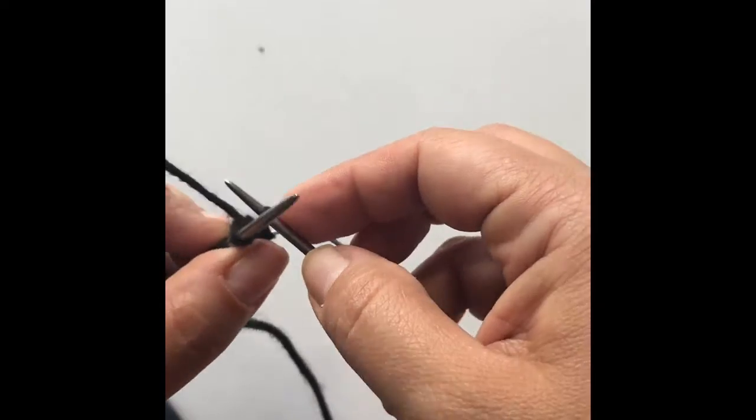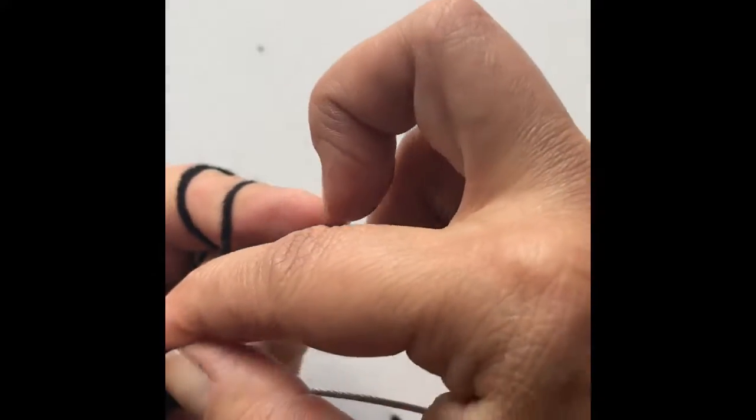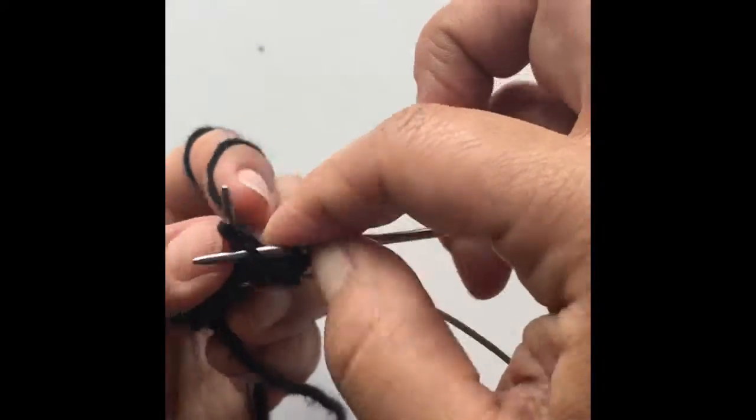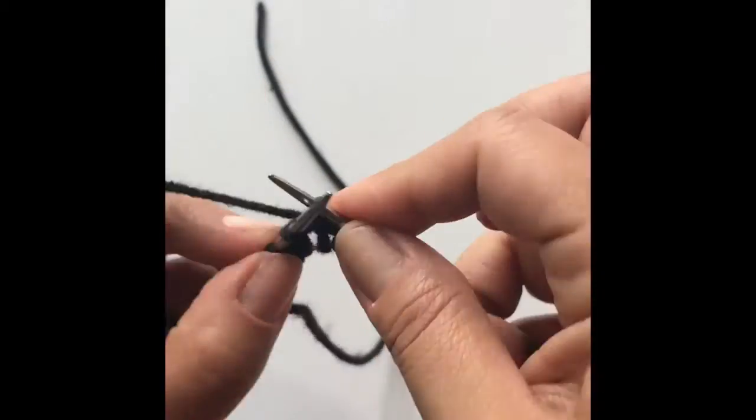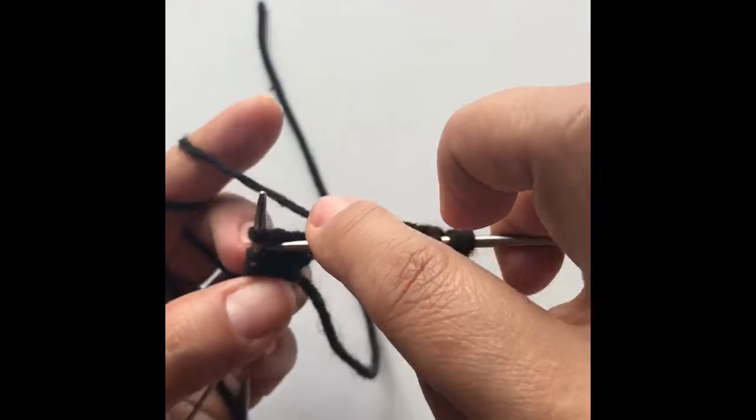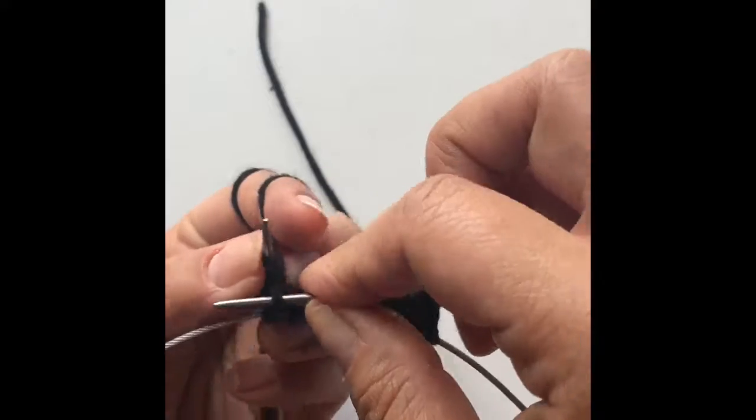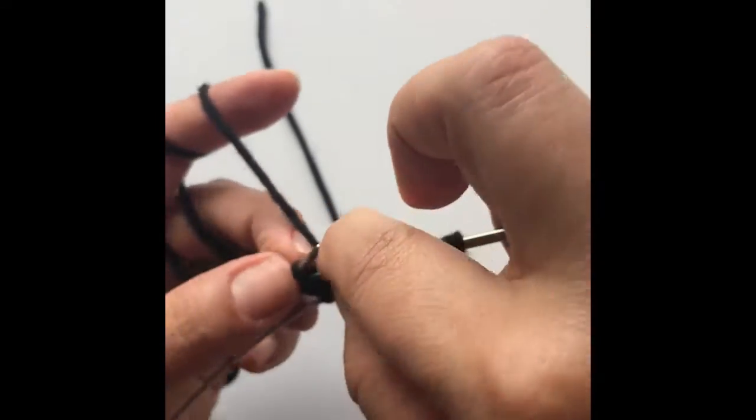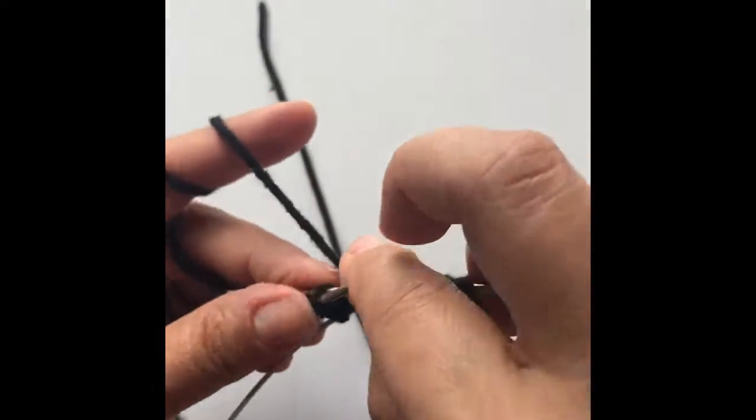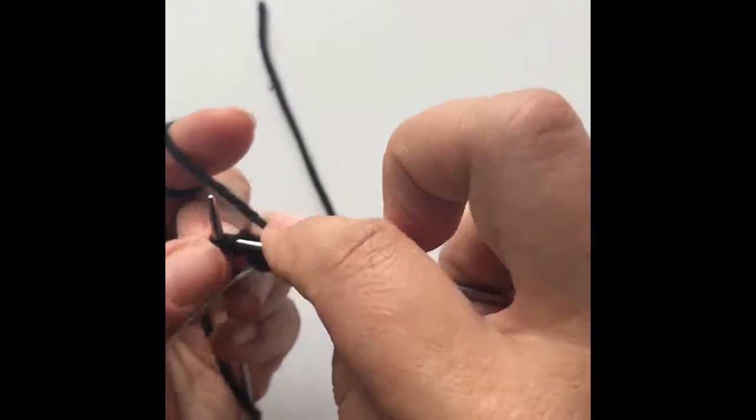So on the first stitch, you're going to knit on the front and back of that first stitch. Now you have two where you once had one, and then you're going to knit all the way across until you get to the second to the last stitch on that needle. So there, second to the last stitch, you're going to knit in front, knit in the back loop, knit, and then knit the last stitch regularly.